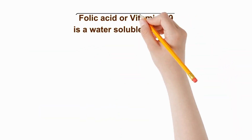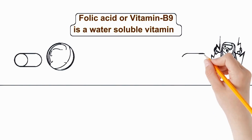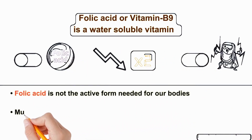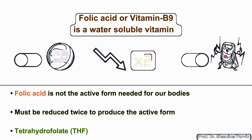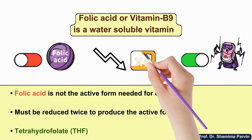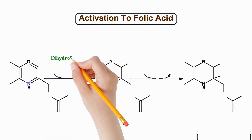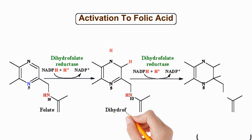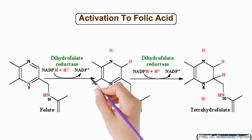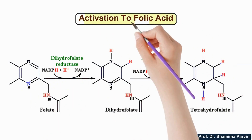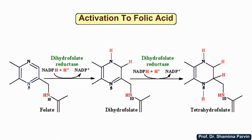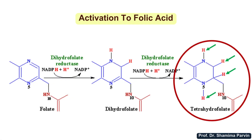This is because we are taking an inactive form of folic acid. To become active, it must be reduced twice within the body, and it finally transforms into tetrahydrofolate, which is its active form. First, the inactive folate is reduced to dihydrofolate with the help of the enzyme dihydrofolate reductase through the addition of hydrogen. Then the dihydrofolate is further converted into tetrahydrofolate, again by dihydrofolate reductase — this is now the active form of folic acid.